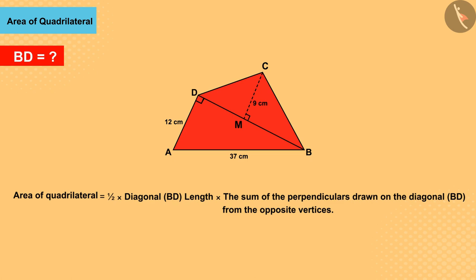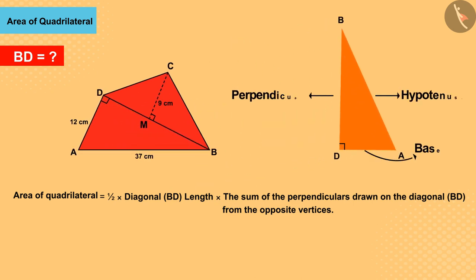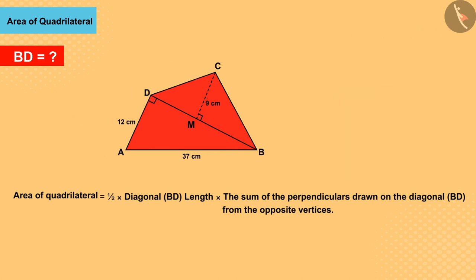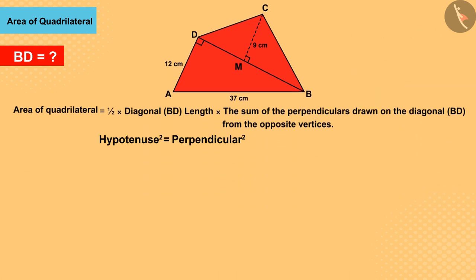In this question it is given that side AD forms a right angle on diagonal BD. Hence triangle ABD is a right angle triangle in which the Pythagorean theorem can be used.